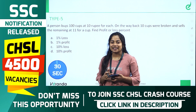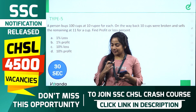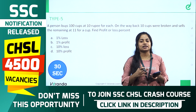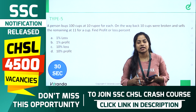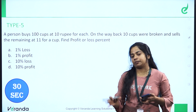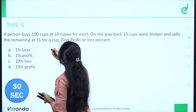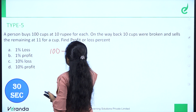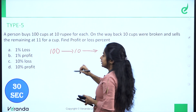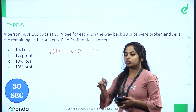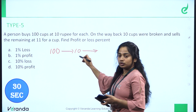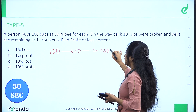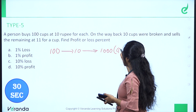Okay, 30 seconds. This question is easy. A person buys 100 cups at 10 rupees each. We are going to take 100 cups at 1,000 rupees — that is the cost price. The cost price is 100 into 10, which gives us 1,000 rupees.